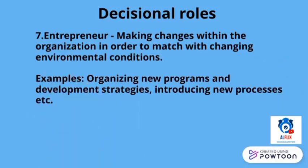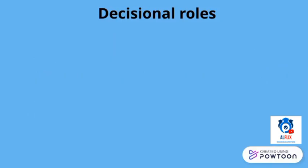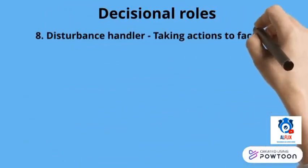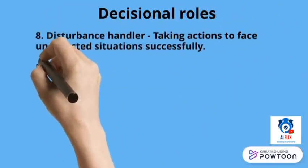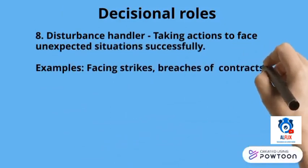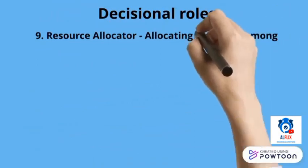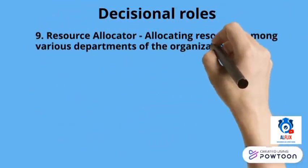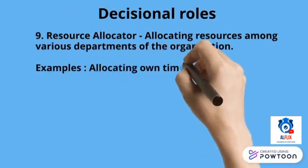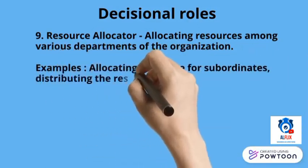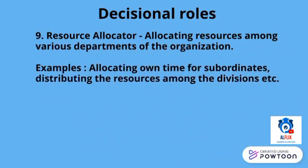Disturbance handler: taking actions to face unexpected situations successfully. Examples include facing strikes, breaches of contracts, consumer complaints, etc. Resource allocator: allocating resources among various departments of the organization. Examples include allocating own time for subordinates, distributing resources among the divisions, etc.